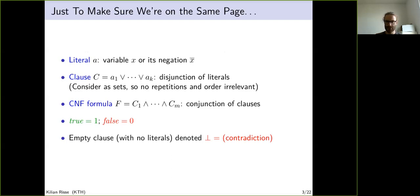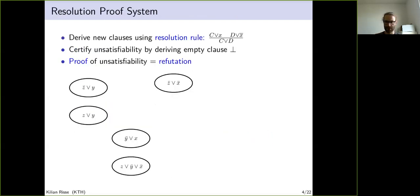The resolution proof system consists of a single rule. If you have two clauses in which a variable appears positive once and negative once—for example, Z or X and D or not X—then one can derive Z or D. To certify the unsatisfiability of a formula, one has to derive the empty clause, bottom, by means of this deduction rule. A proof of unsatisfiability is also called a refutation.